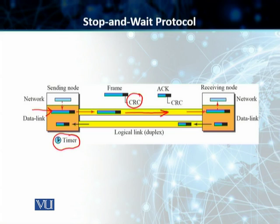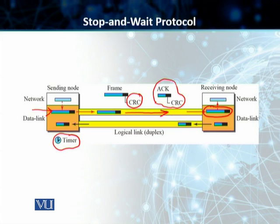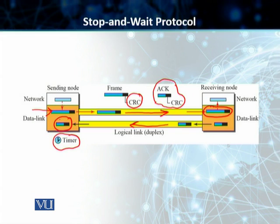If the receiver receives this frame successfully, it first checks using the CRC checker whether the data is corrupted or not. If the data is good, it extracts the packet and passes it to the network layer. At the same time, it creates an acknowledgement, also protected by CRC. The ACK is sent back over the logical duplex link, and once received by the sending node, the sender knows the previous frame was received successfully and sends the new one.